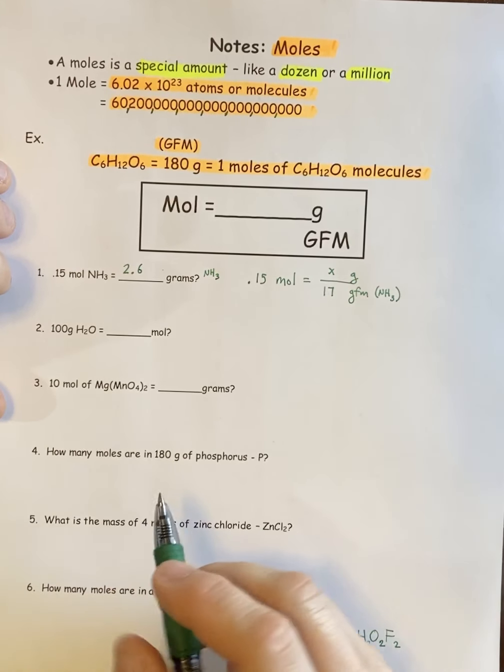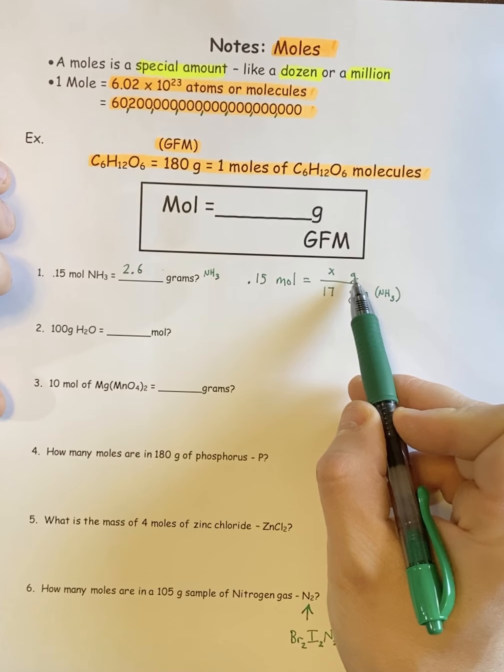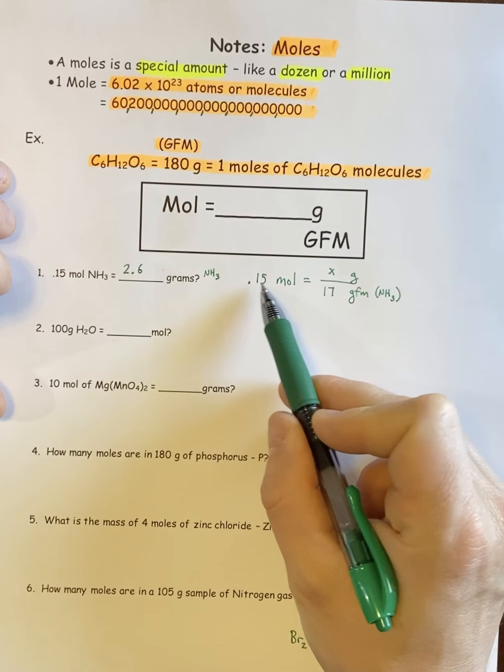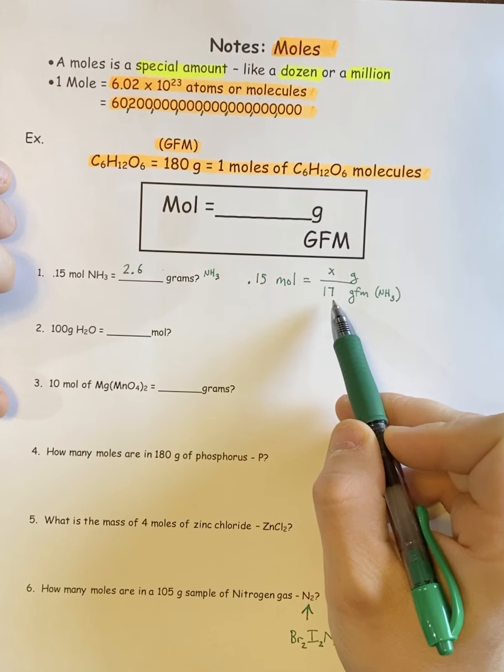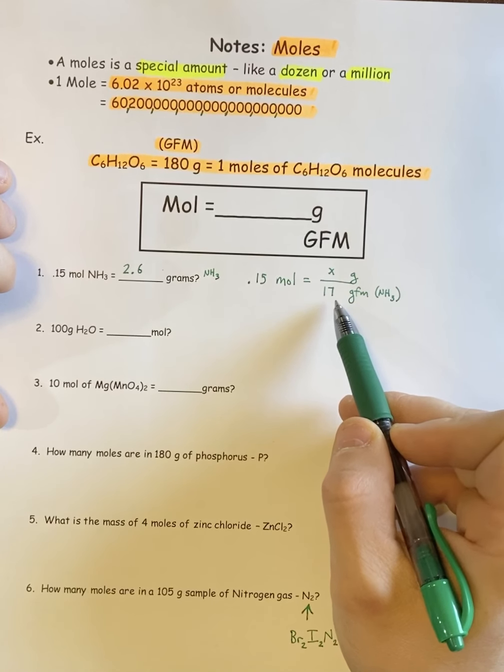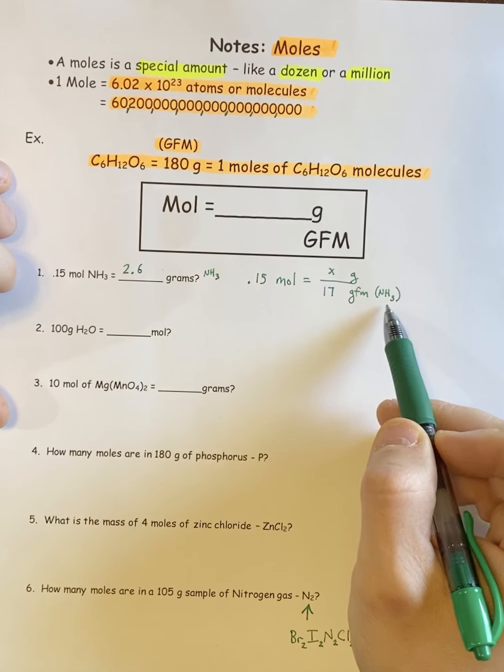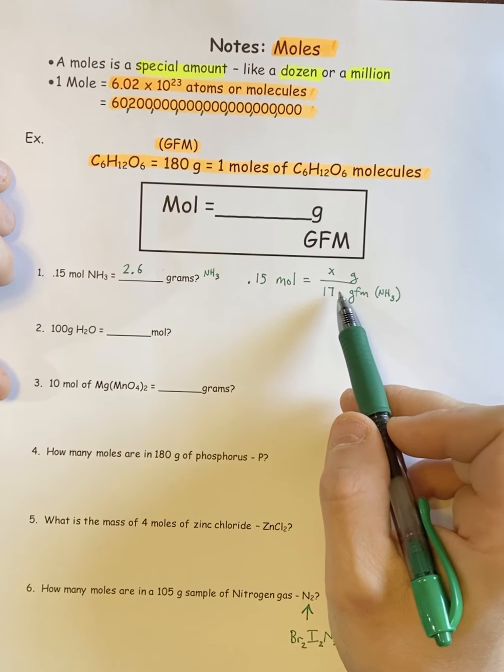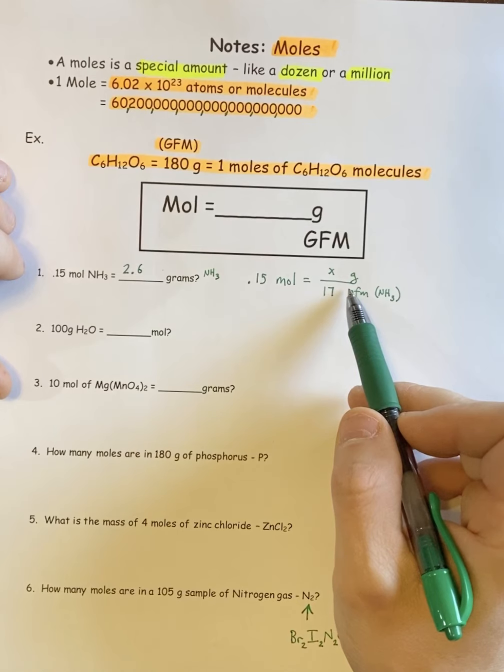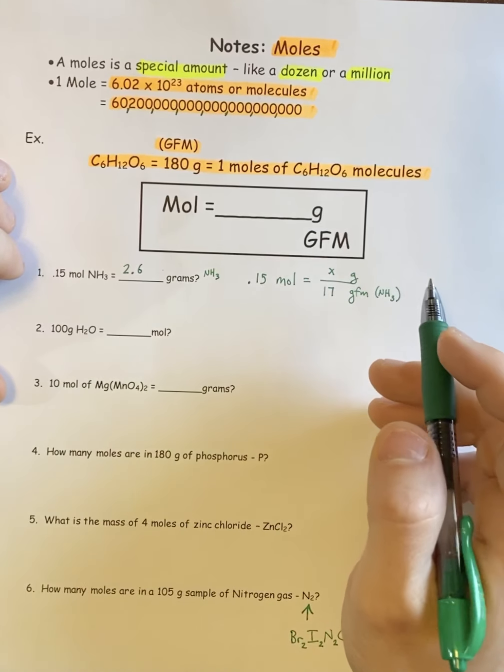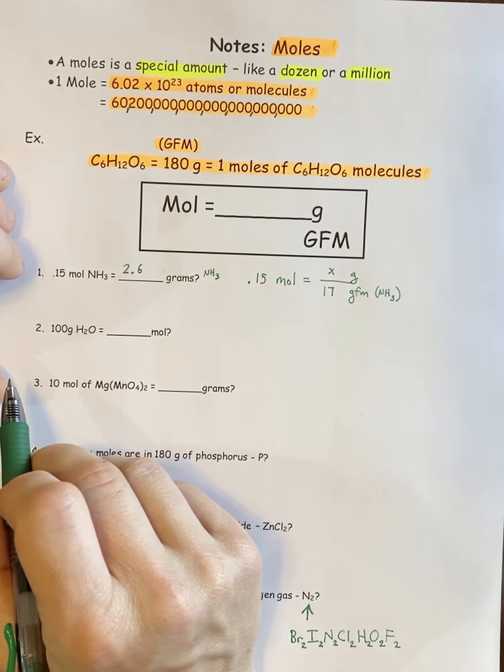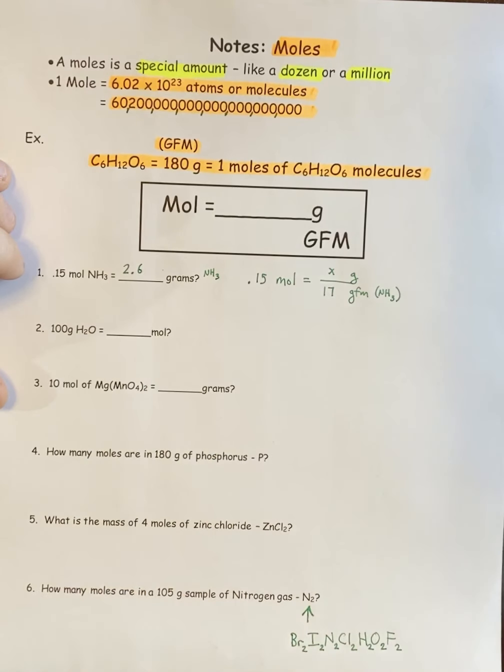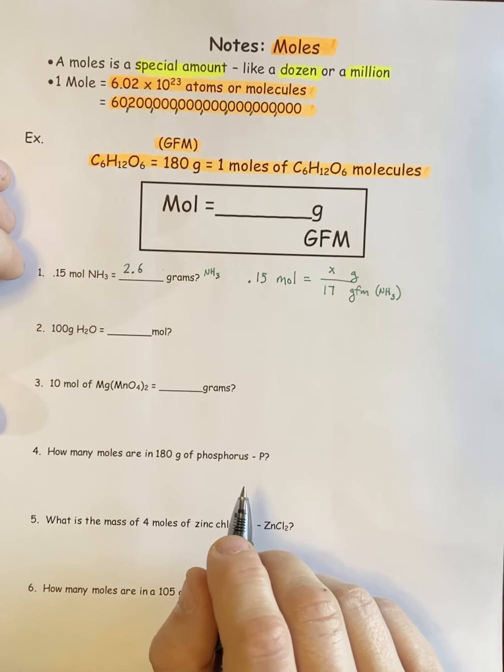There's only three ways you can do this problem. I can put the x in the gram spot, I can put the x in the mole spot, or I can put the x in the GFM and say, what would the mass or the GFM be? That wouldn't necessarily get you the formula, but you'd at least know how much that formula should weigh. Think of it like the density formula. There's only three ways to do it.